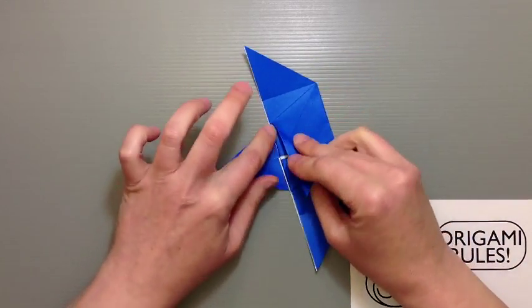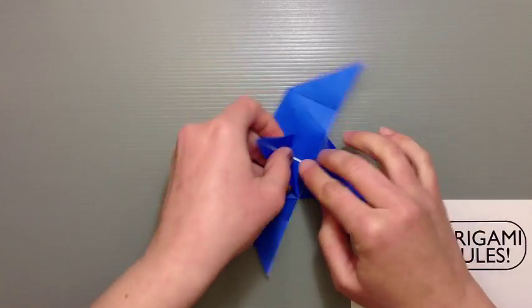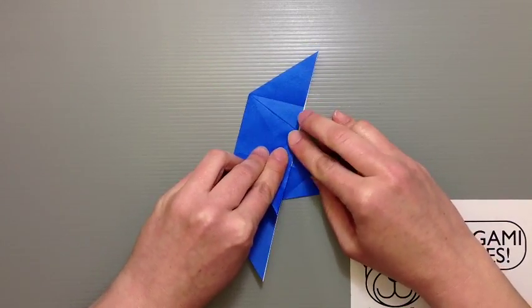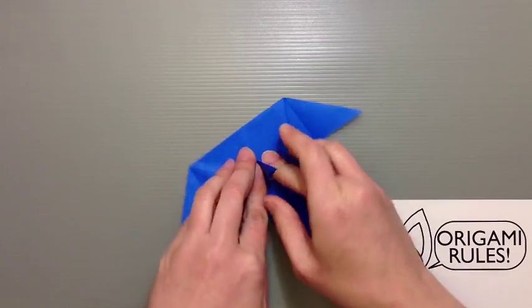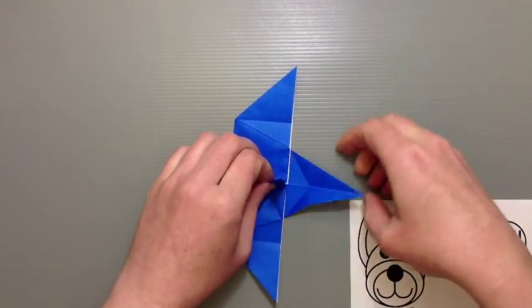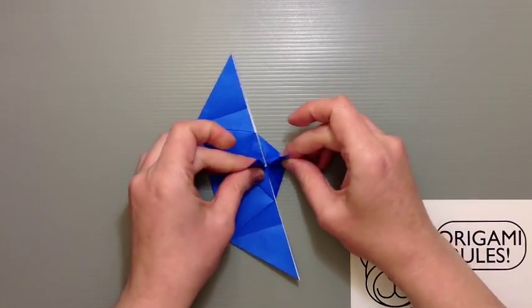I'm just going to repeat those steps on this side too. Just folding towards the center. And when you bring both of those together, you should be able to create a nice little beak in the middle.